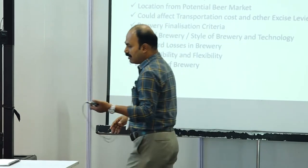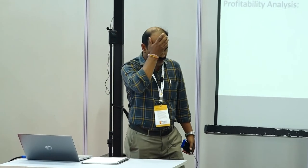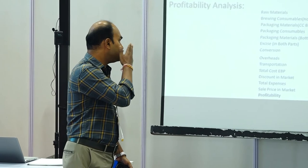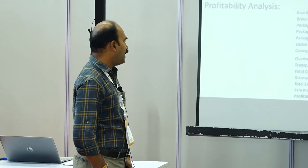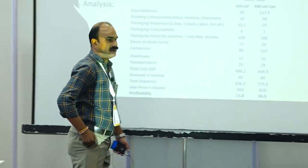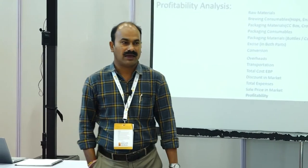Looking at a sample profitability analysis with a new bottle — if the government price is 550 rupees per case for super premium bottled beer and 820 rupees per case for canned beer — the profitability comes to about 24 rupees per case for bottle and 95 rupees per case for can. Large discounts of 40 and 80 rupees respectively have been included for new entrants, as shops expect discounts for new brands.